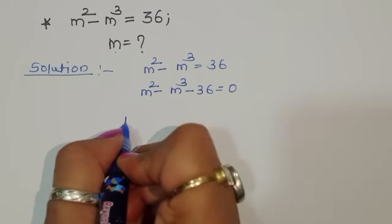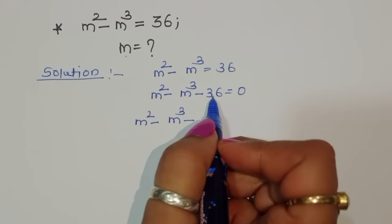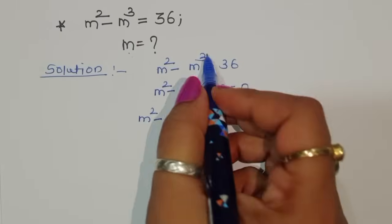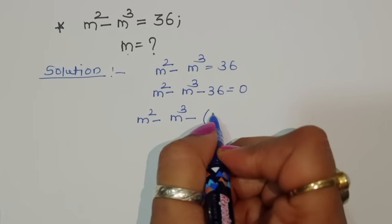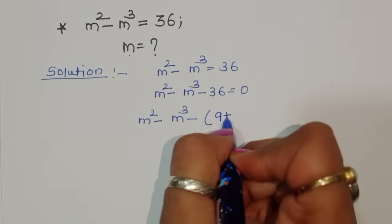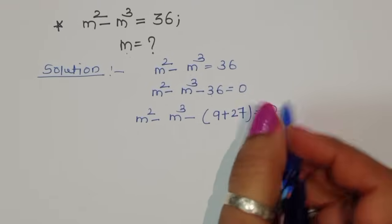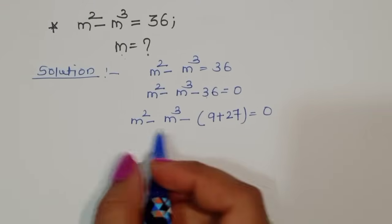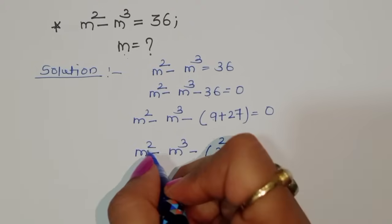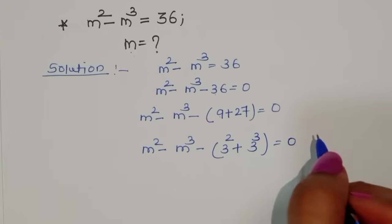In equation form: m squared minus m cubed minus 36 equals 0. We have to convert 36 into two numbers — an addition of two numbers which will give a square and a cube. So, 3 squared is 9 and 3 cubed is 27, and 9 plus 27 is 36. So we convert: m squared minus m cubed minus 3 squared plus 3 cubed equals 0.